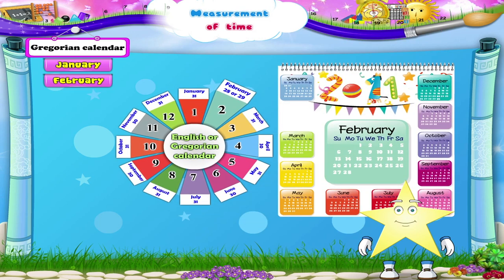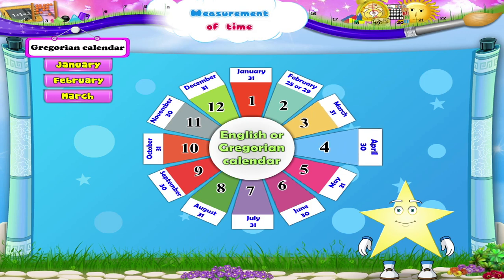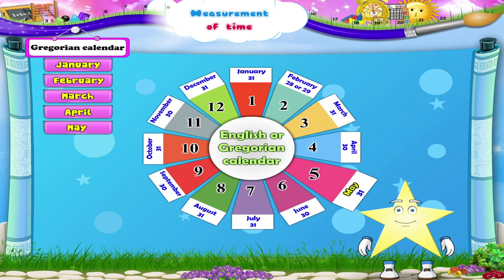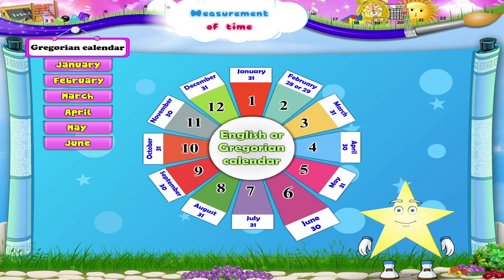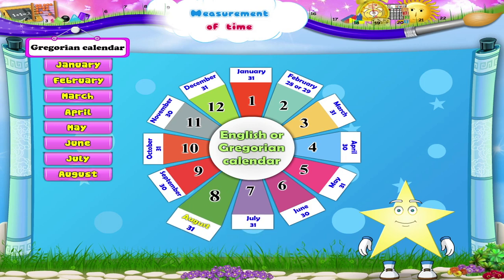How many days does this calendar show, Starry? Yes, 28 days. Which is the third month? It is March; it has 31 days. The fourth month is April; it has 30 days. The fifth month, May, has 31 days. Which is the sixth month? Yes, it is June. The month of June has 30 days. The seventh month is July; it has 31 days. August is the eighth month; it also has 31 days.